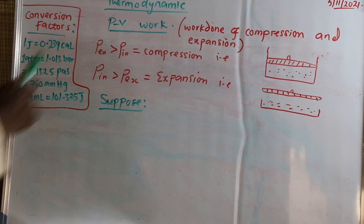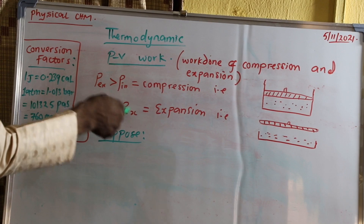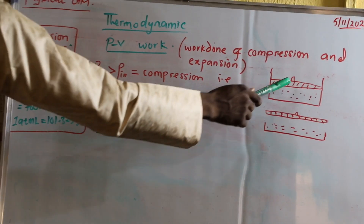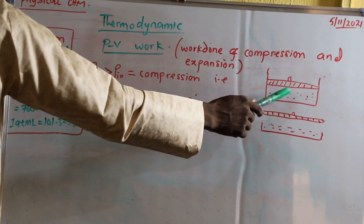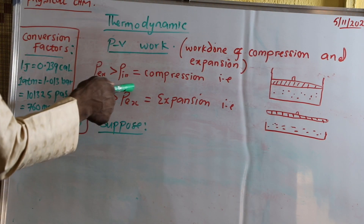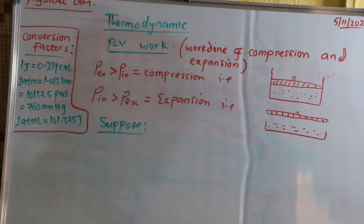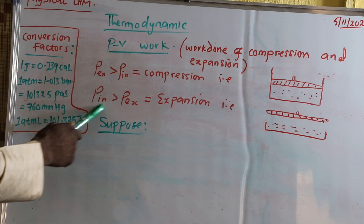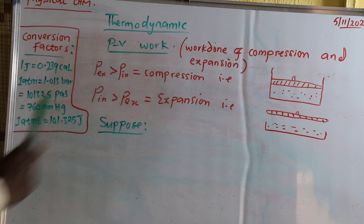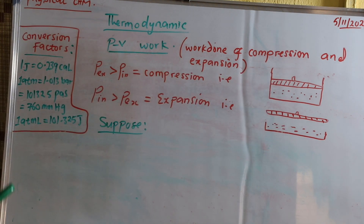PV work is the work of compression and expansion. When external pressure Pex is greater than internal pressure, we refer to it as compression — the lid will go inside the cylinder, pushing the gases inside the system down. And for expansion, when P internal is greater than P external, then we have expansion — it pushes out the lid. That is expansion.